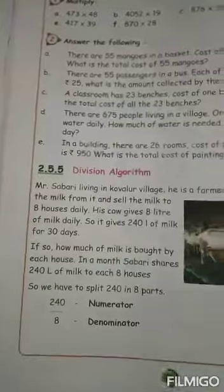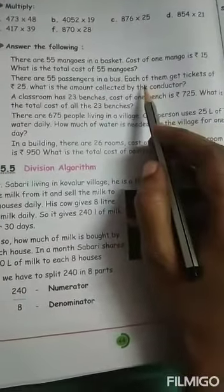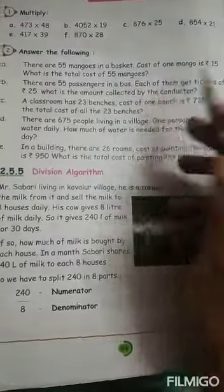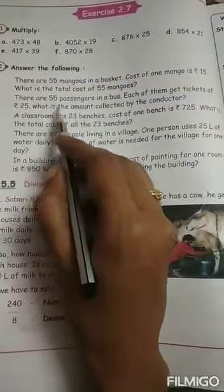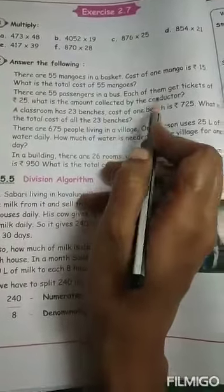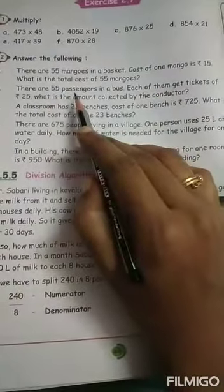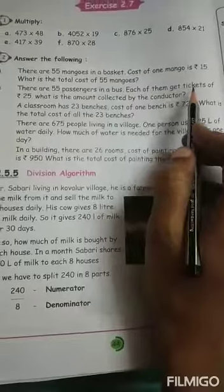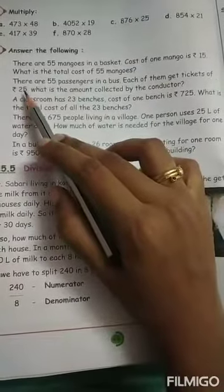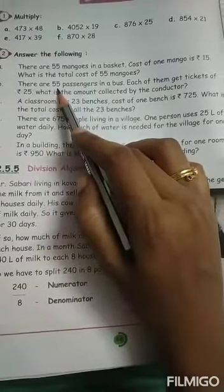See here. There are 55 passengers in a bus. In one bus, 55 passengers were there. Each of them get tickets of rupees 25. What is the amount collected by the conductor? Each of them, totally 55 passengers were there. Each person got tickets for rupees 25. For 1 passenger, it is given as 25. We have to find for 55 passengers.